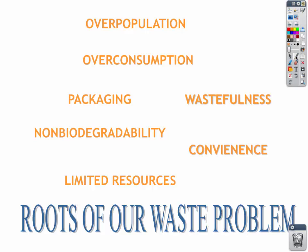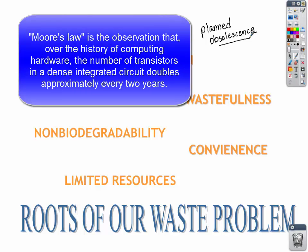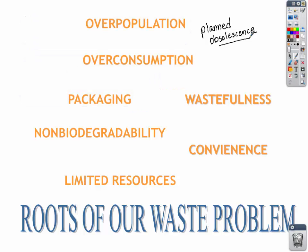Another root problem of our waste is planned obsolescence — the concept that we design products that are planned to become obsolete. You know this through electronics and Moore's Law, where electronics go obsolete after only a few years. But planned obsolescence spans many other products and materials: things like toaster ovens, napkins and paper towels, diapers — things that are supposed to be disposed of.